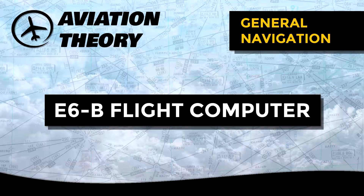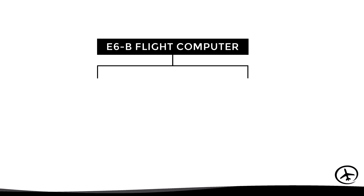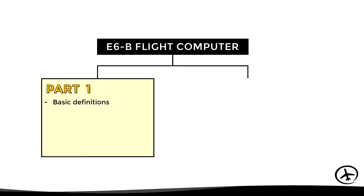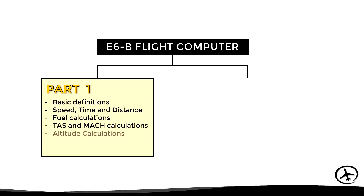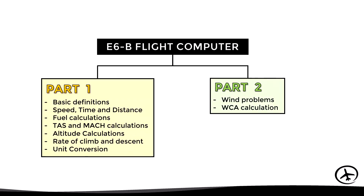Today we will look at how to use the E6B manual flight computer. Since this topic is a bit long, it will be divided into two videos. In this first part we will see some basic definitions and the different parts of the device. We will also look at how to calculate speed, time, distance, fuel consumption, true airspeed, Mach number, different altitudes, rate of climb or descent, and unit conversions.